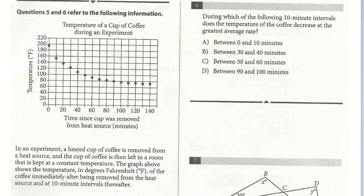Let's take a look at this graph. We've got the temperature of a cup of coffee during an experiment on the x-axis — the time since the cup was removed from a heat source in minutes — and on the y-axis is the temperature. You can see this is not a linear decline; this is exponential. It's curved, not a straight line.